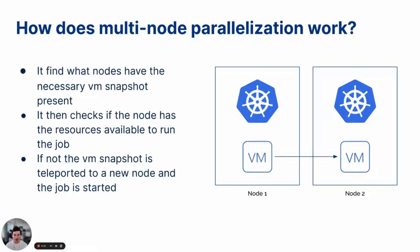If no node with a snapshot has enough resources, the snapshot will then be moved to an appropriate node with enough resources and the job is started.